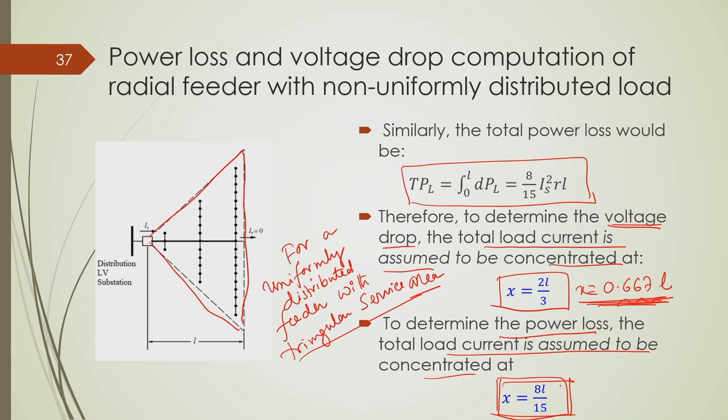In this particular lecture, I focused on the analytical approach to find out expressions for two important limiting factors — power loss and voltage drop — for two typical cases: a feeder with a rectangular service area and uniformly distributed load, and a feeder with a triangular service area and uniformly distributed load. We can understand how these voltage drop and power loss expressions differ from a typical lumped load concentrated at one point of the feeder. Thank you.